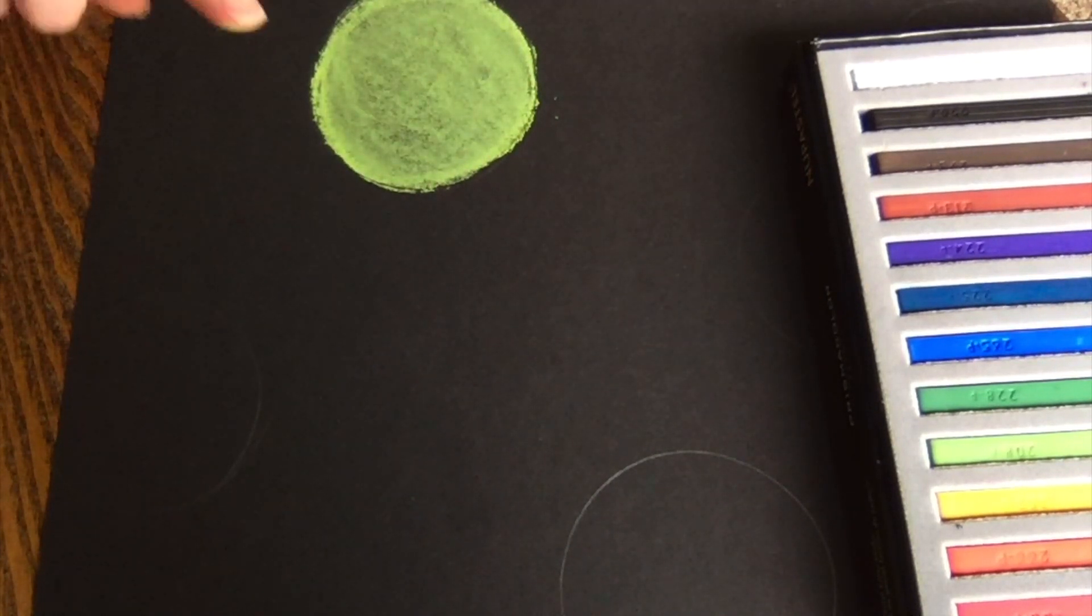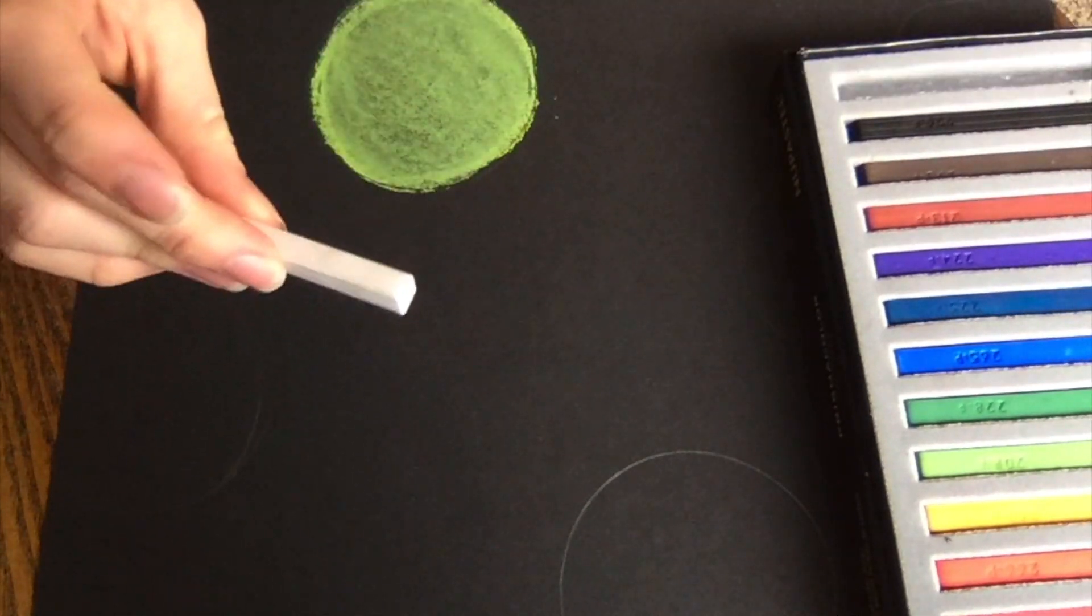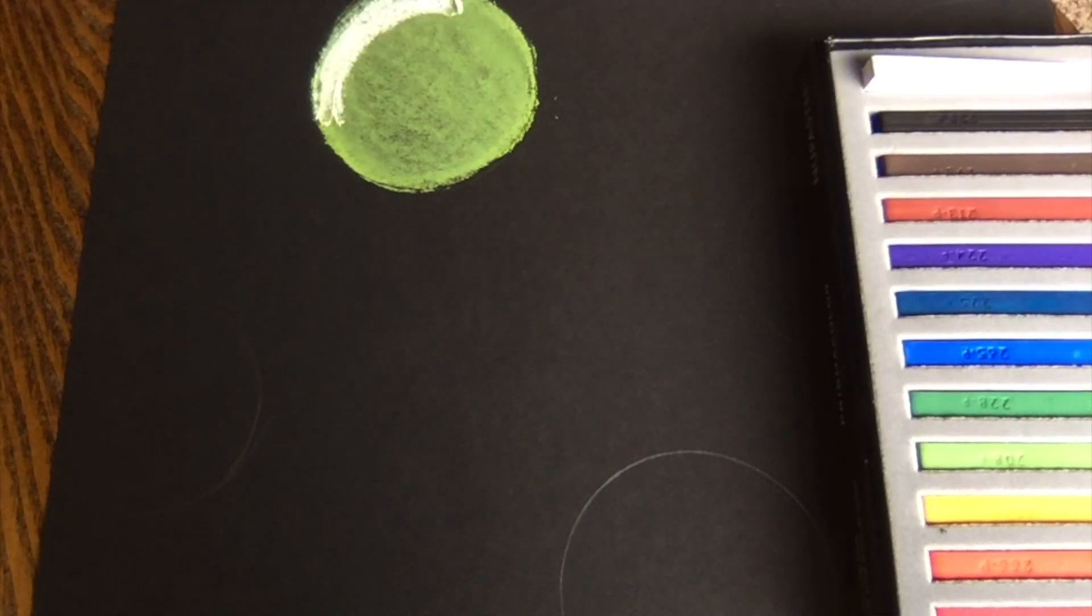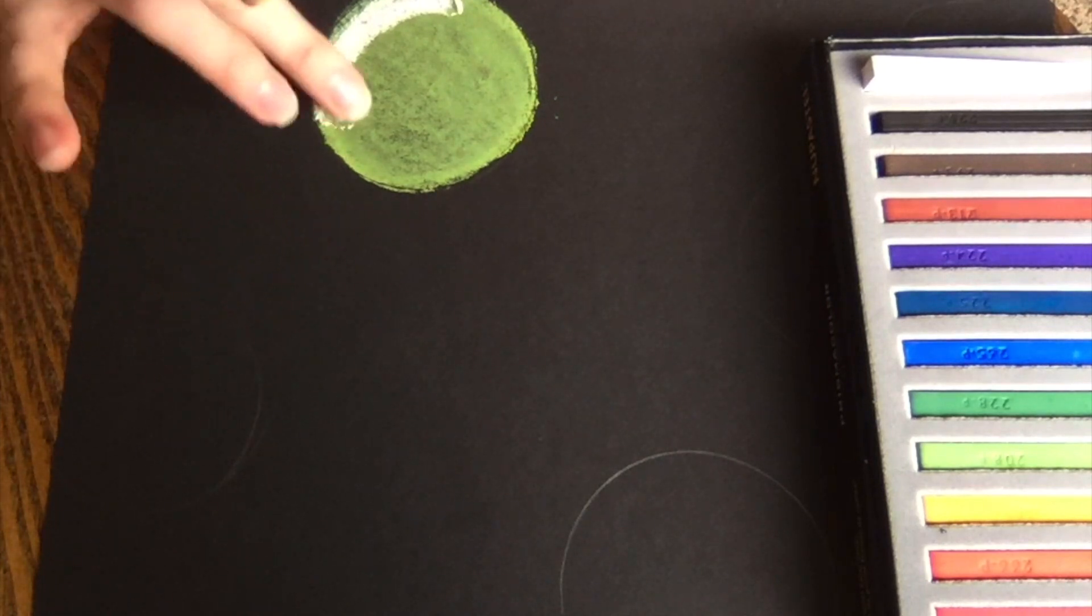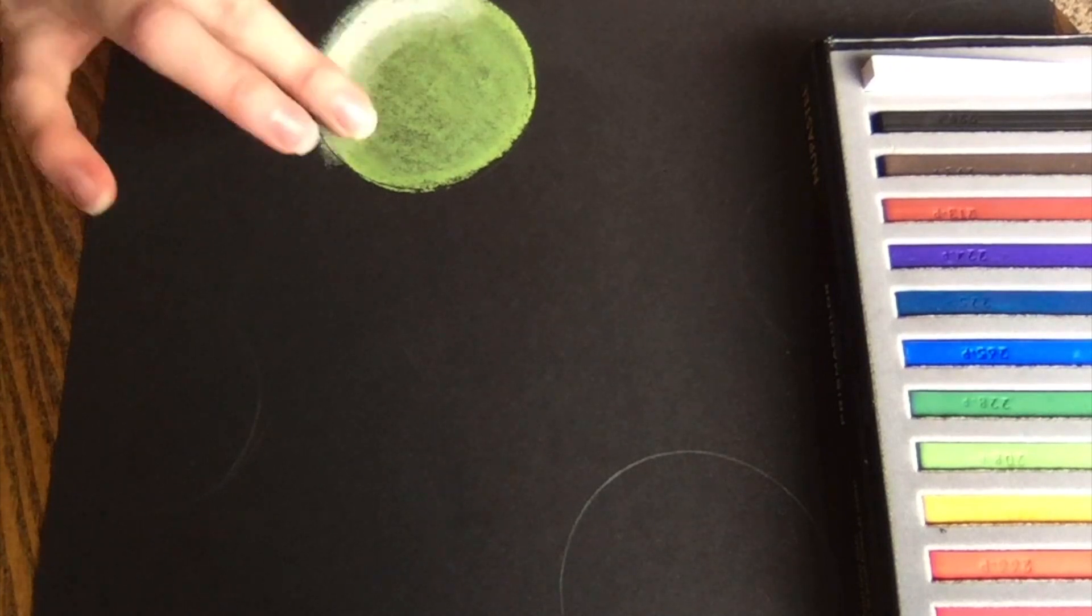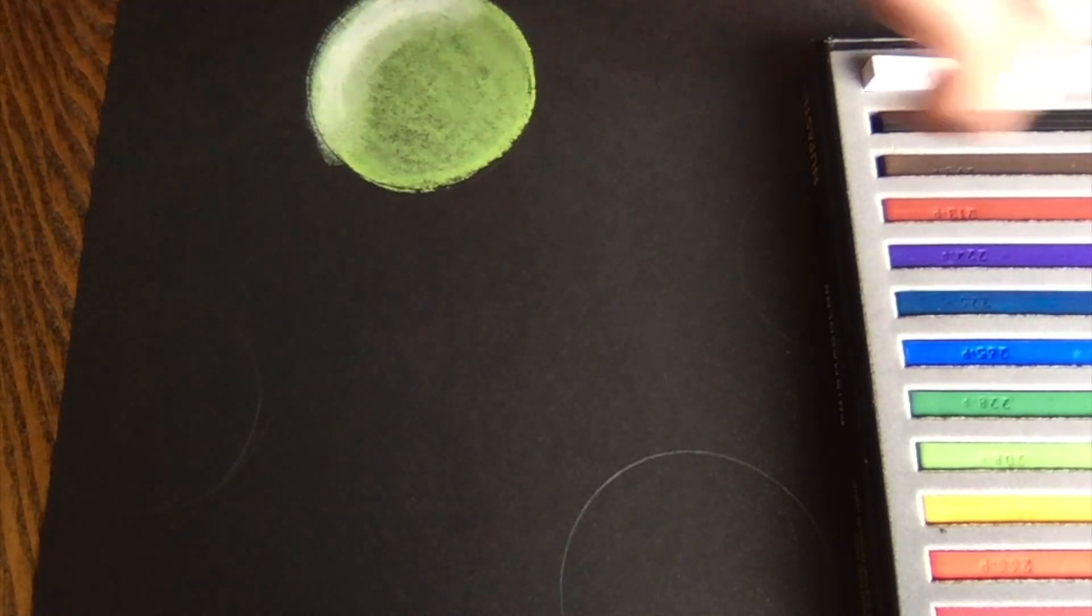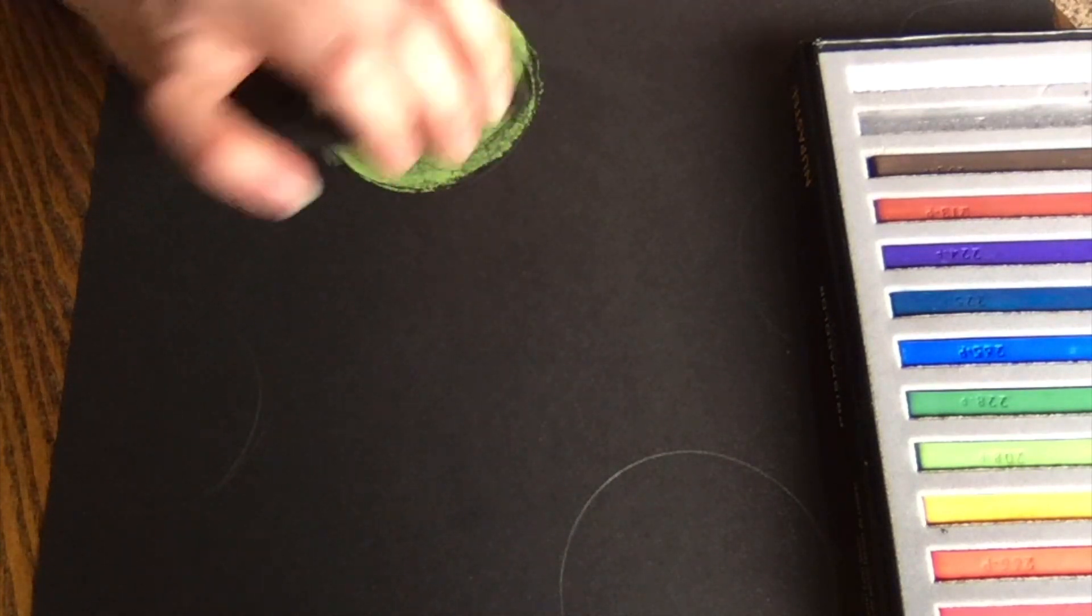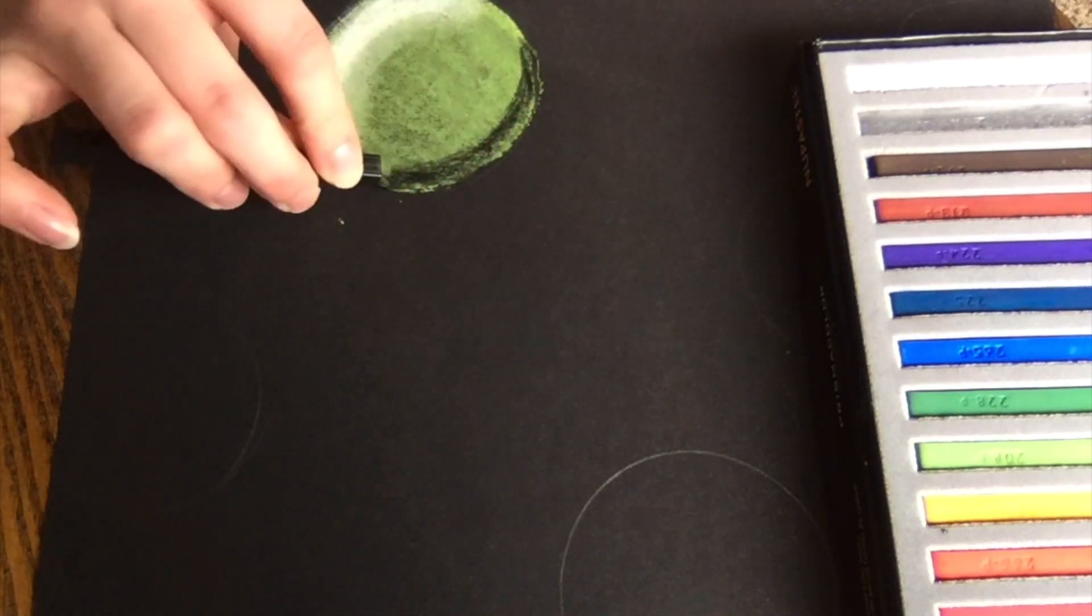All right, now I've got to figure out where my light is coming from. I'm going to have my light coming from the top left there. So I'm going to grab my white chalk pastel, and on that top left side, just color kind of a crescent shape or a little highlight. And then using a finger, I'm going to blend that in. So kind of mixing those two chalk colors together.